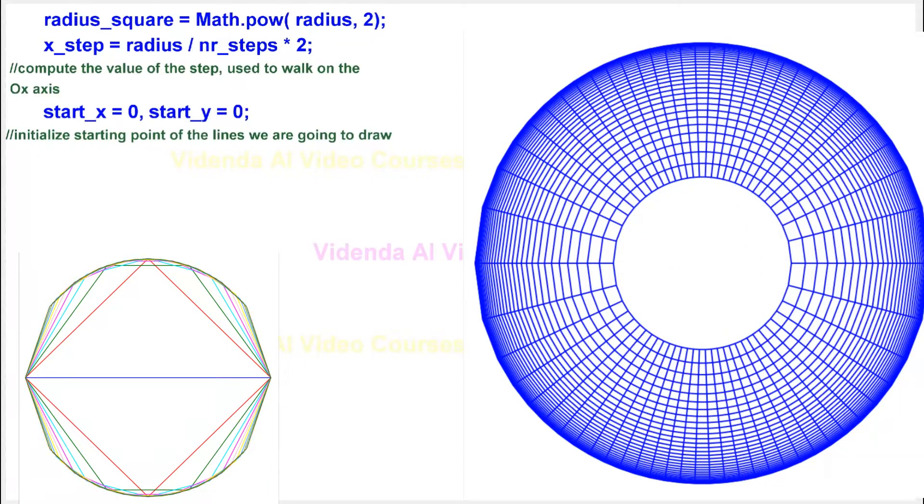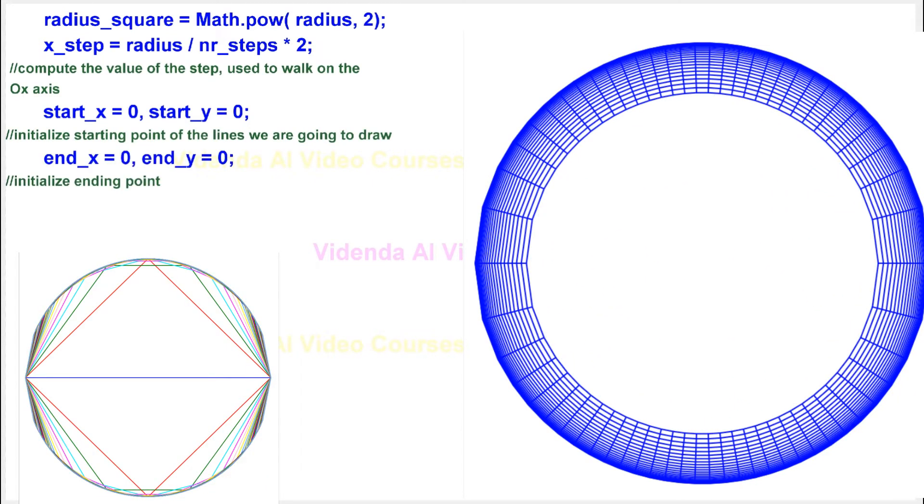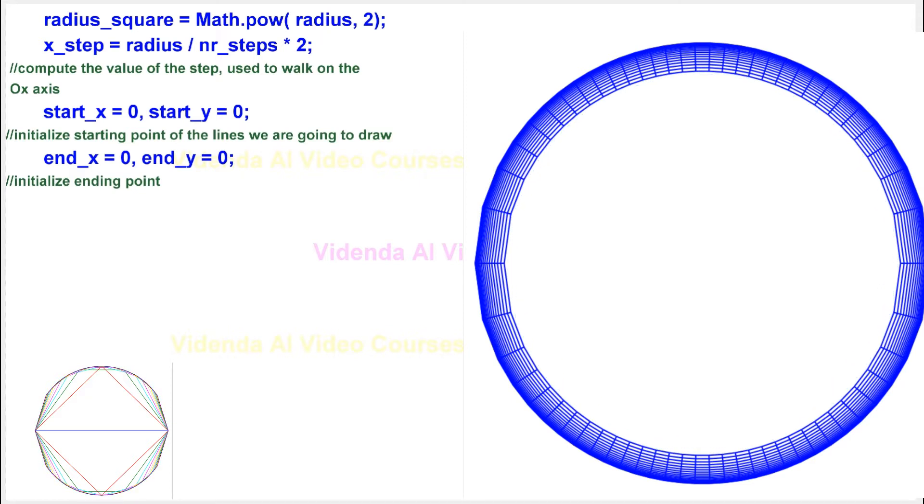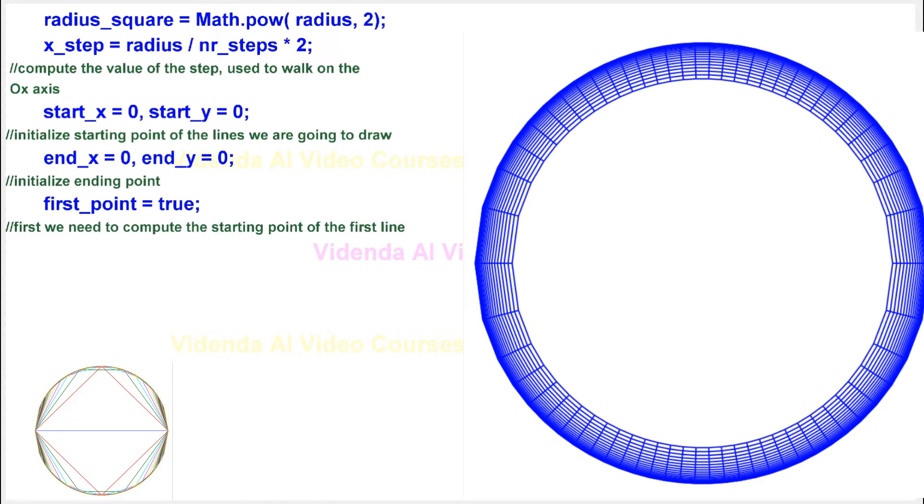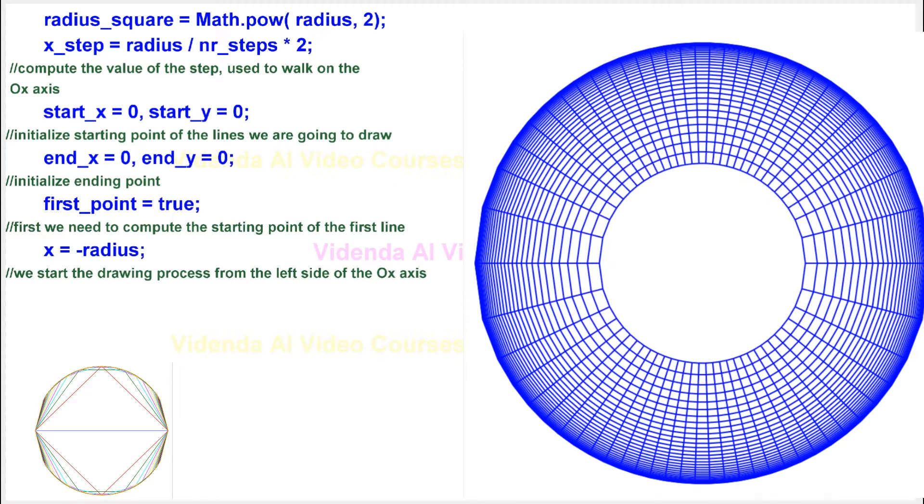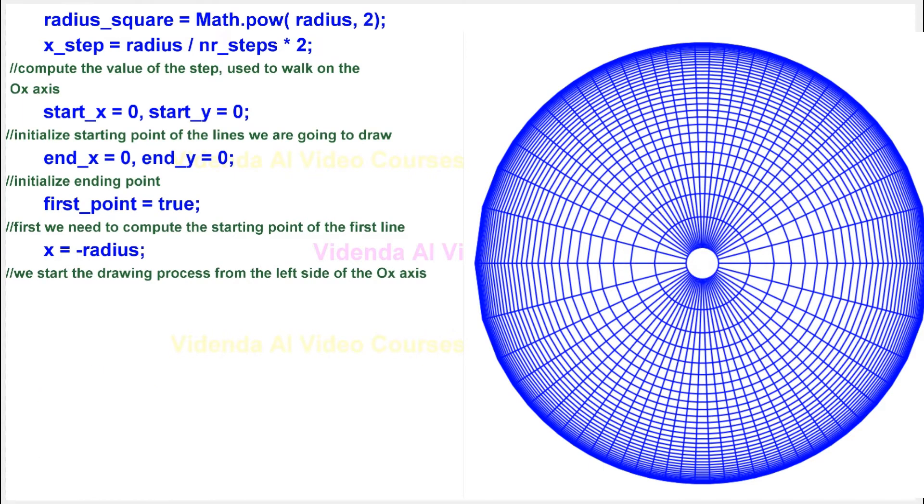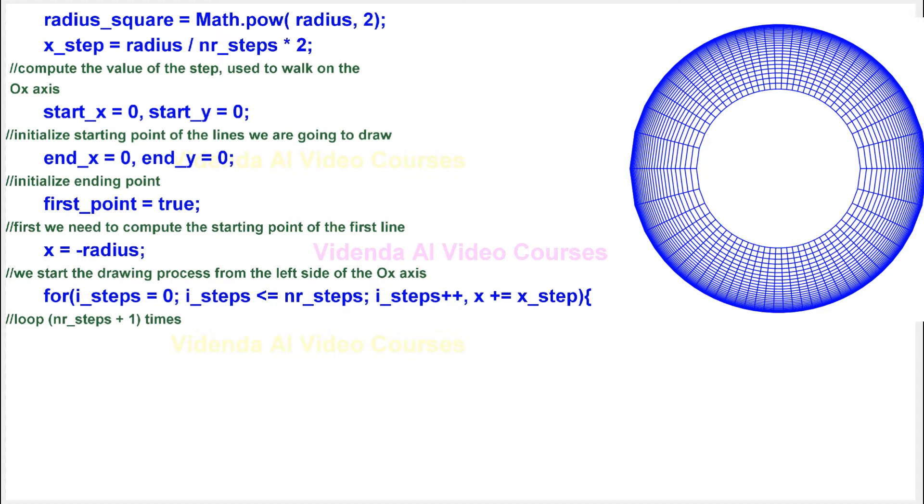Initialize starting point of the lines we are going to draw. Initialize ending point. First we need to compute the starting point of the first line. We start the drawing process from the left side of the x axis. Loop, nr_steps plus 1, times.